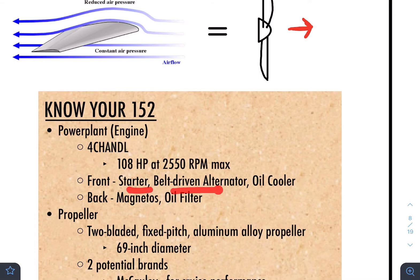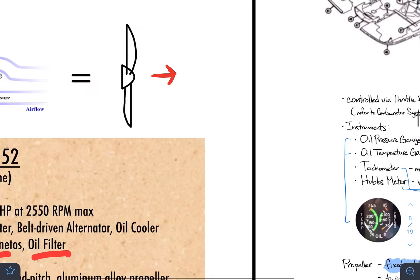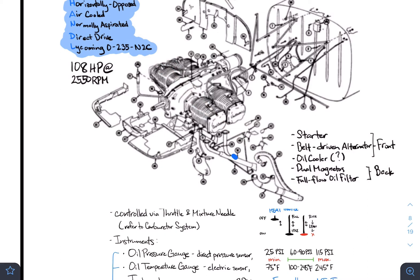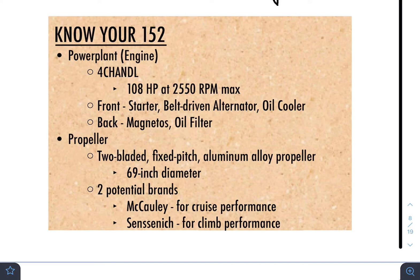Over the front of the engine, there is a starter, a belt-driven alternator, and the oil cooler. The back has the magnetos and the oil filter. They don't look at these too much, but splitting the engine front to back: the front has the starter and alternator, and the dual magnetos and oil filter are in the back.